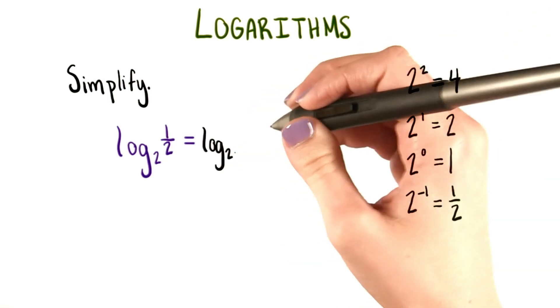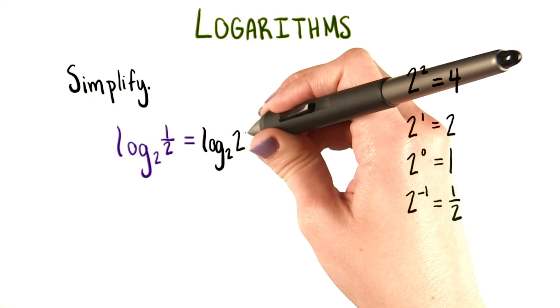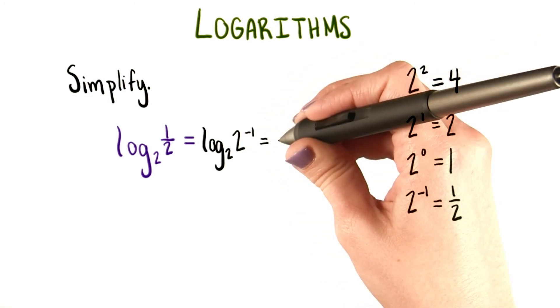That means we can write log base 2 of 1 half as log base 2 of 2 to the negative 1. That just gives us negative 1.